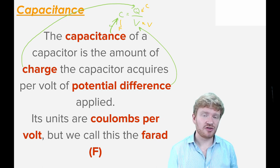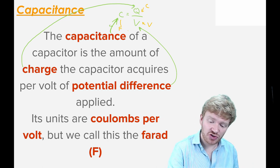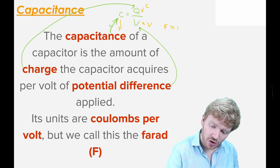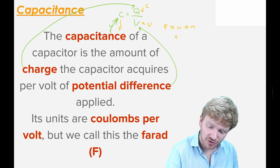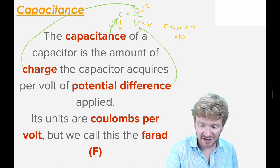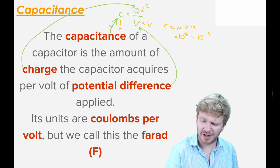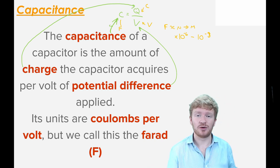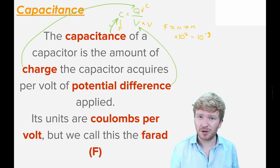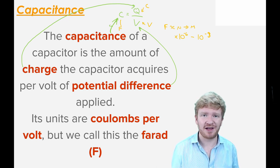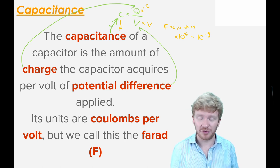It turns out that most capacitors store very, very little charge for a voltage. Generally, the farad value is in the range of micro to milli. When you calculate most capacitances, you should be getting something between 10⁻⁶ and 10⁻³. Nano farads are quite common too. If you get something in the thousands, unless it's talking about a supercapacitor, chances are you may have gone wrong. Expect small numbers for capacitance.